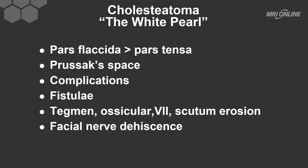The complications of cholesteatoma include fistulae to various structures. You can have a fistula to the seventh cranial nerve, a fistula to the semicircular canals, and even a fistula to the vascular structures. This is obviously one of the dangerous complications of a cholesteatoma.